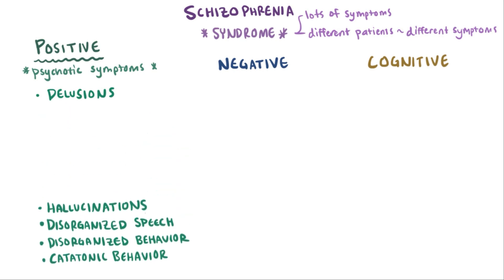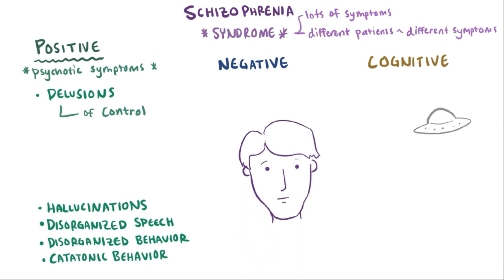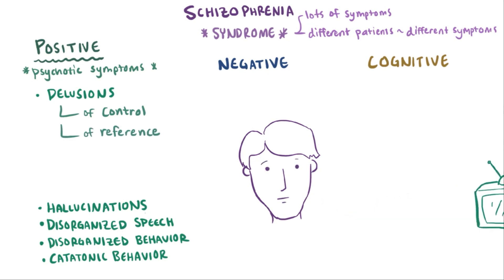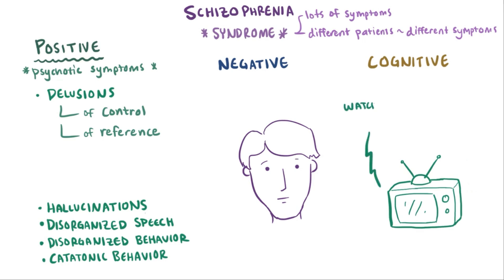Delusions are false beliefs that the person might feel very strongly about, so much so that they won't change their mind even if you give them evidence against it. There are all sorts of different delusions — for example, a delusion of control, where somebody thinks that some outside force or person or thing is controlling their actions. They could also be delusions of reference, where someone might think that insignificant remarks are directed at them, like a newscaster is speaking directly to them through the TV.